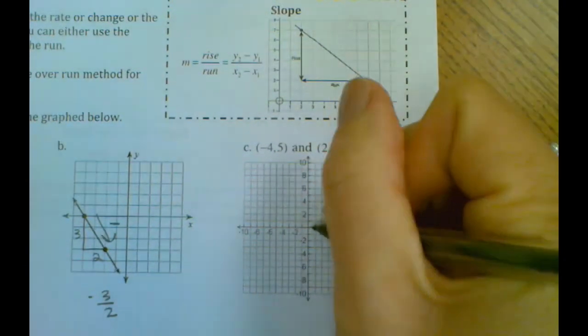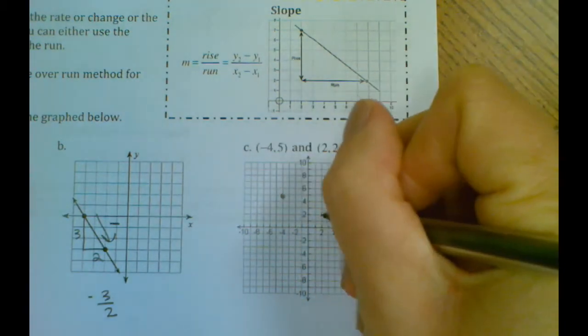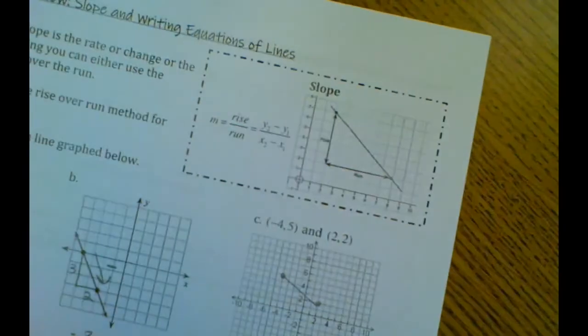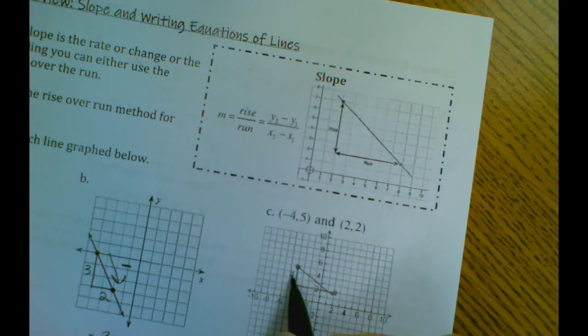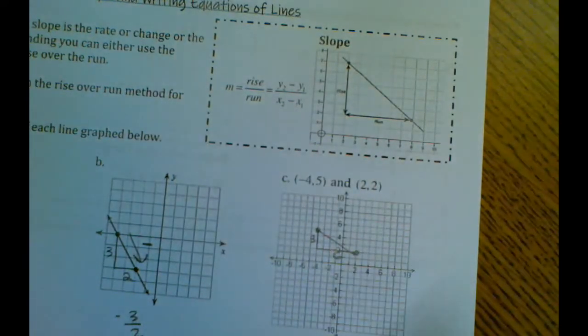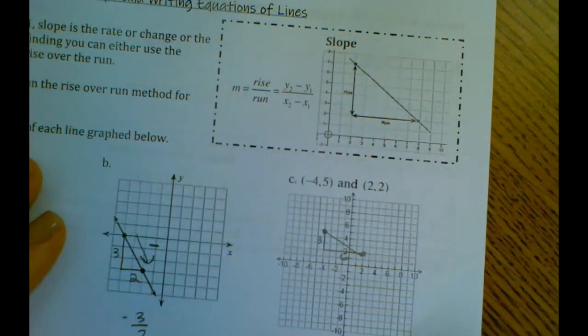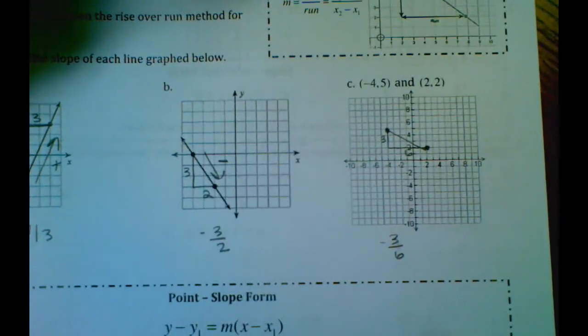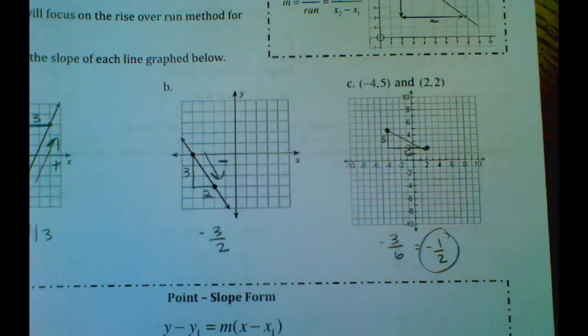On letter C, we need to go ahead and plot these points. We'll draw that line. Okay, so there's our line. If we do our rise over run here, we have a rise of three and a run of six. Actually, oops, I'm sorry. It's negative, right? Because it's going down from left to right. But we can actually reduce this to negative one half for our slope there.